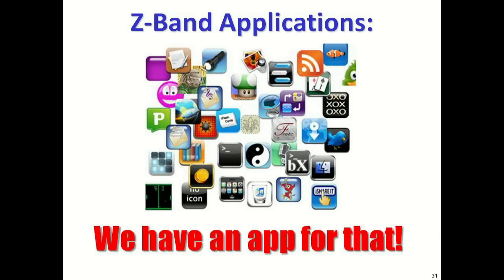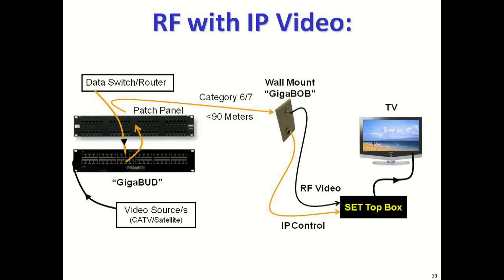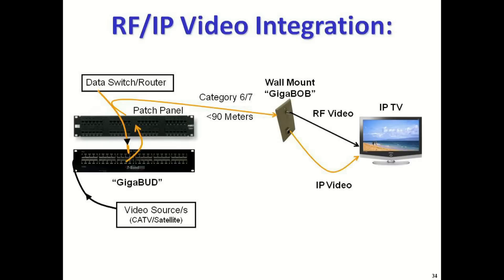Here is the basic system layout: TV signal is fed into the CATV input on the back of the video hub. From any one of the lower ports on the front of the Gigabud, you connect to your standard patch panel. The signal continues over the cable run to the RJ45 wall plate, to the Gigabob, and then connects to the TV with a small piece of coax. Adding IP: the IP source is connected into the corresponding top port and broken out at the balun, with a set top box delegating between IP video streaming or IP control — or incorporate an IP TV and eliminate the need for a set top box.